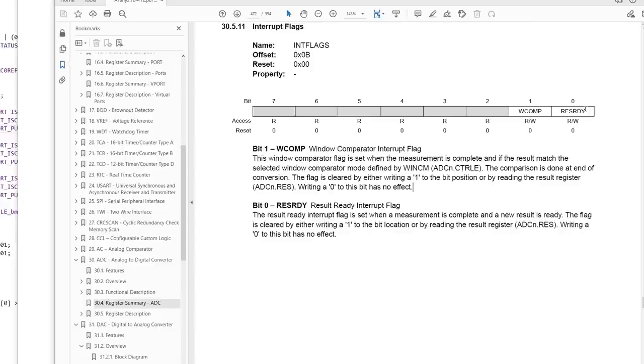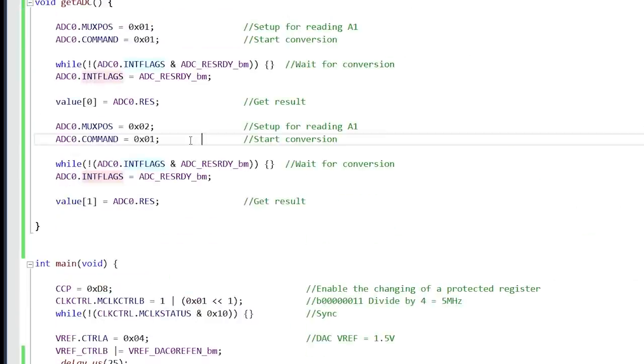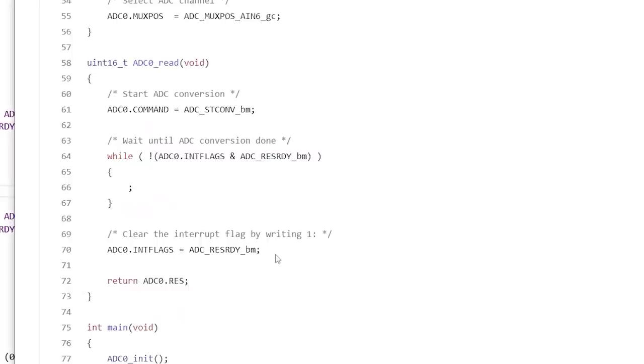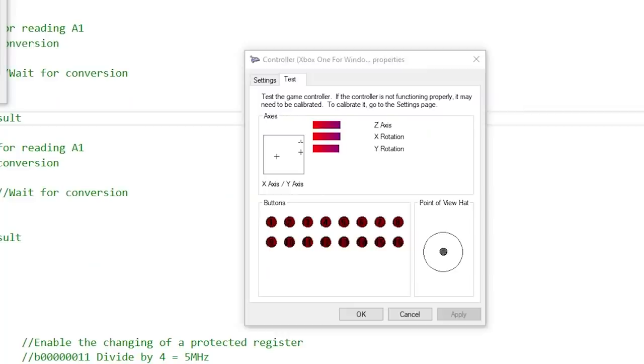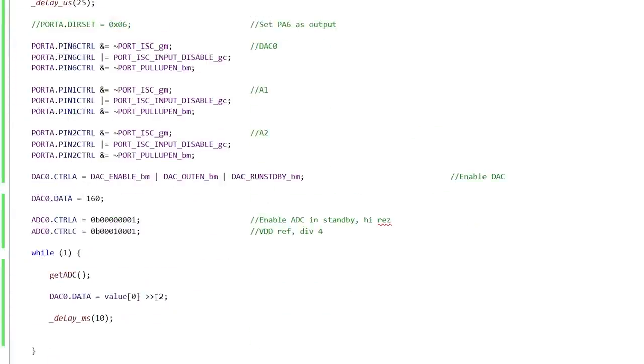Get ADC DAC 0 data equals value 0 divided by 4 or did did did did yeah, I think I found the problem. So I hooked this up to my meter to make sure that there were still analog values coming off the ADC to make sure that nothing broke and there were. Yeah, so I was looking at int flags like this is what you checked to make sure that the result is ready. So you wait for this to turn into a 1. Then it says the result ready interact flag is complete and a new result is ready. The flag is cleared by either writing a 1 to the bit location or by reading the result register. So it says or by reading the result register but what was happening was it wasn't working.